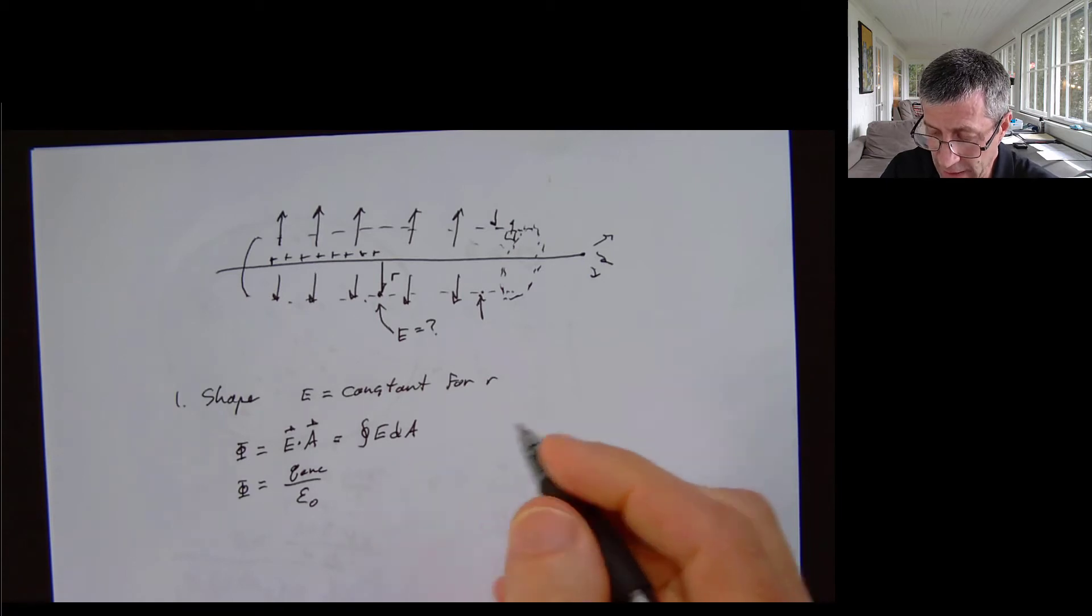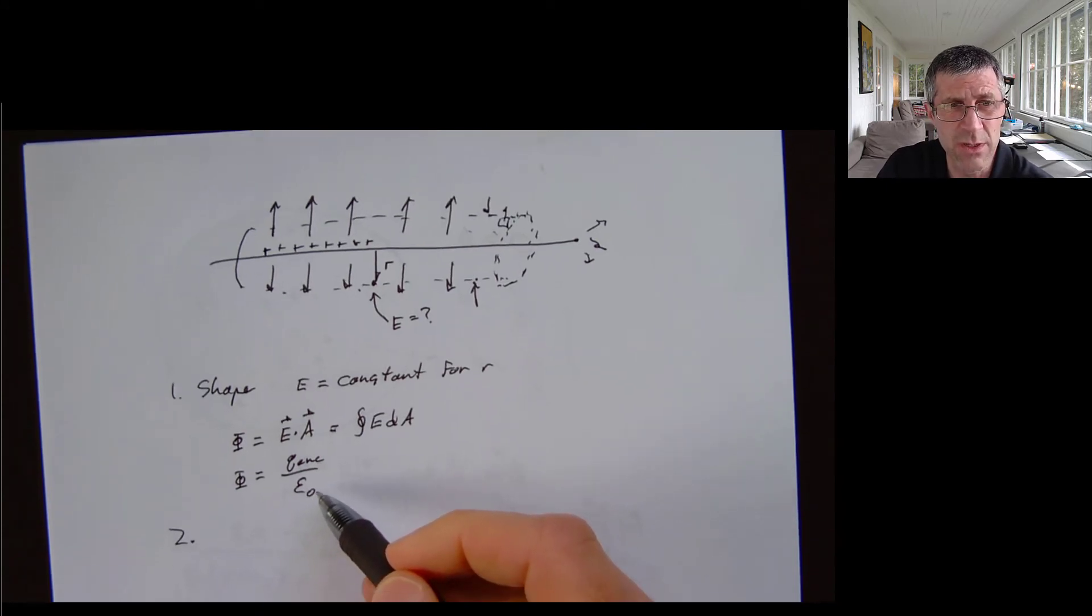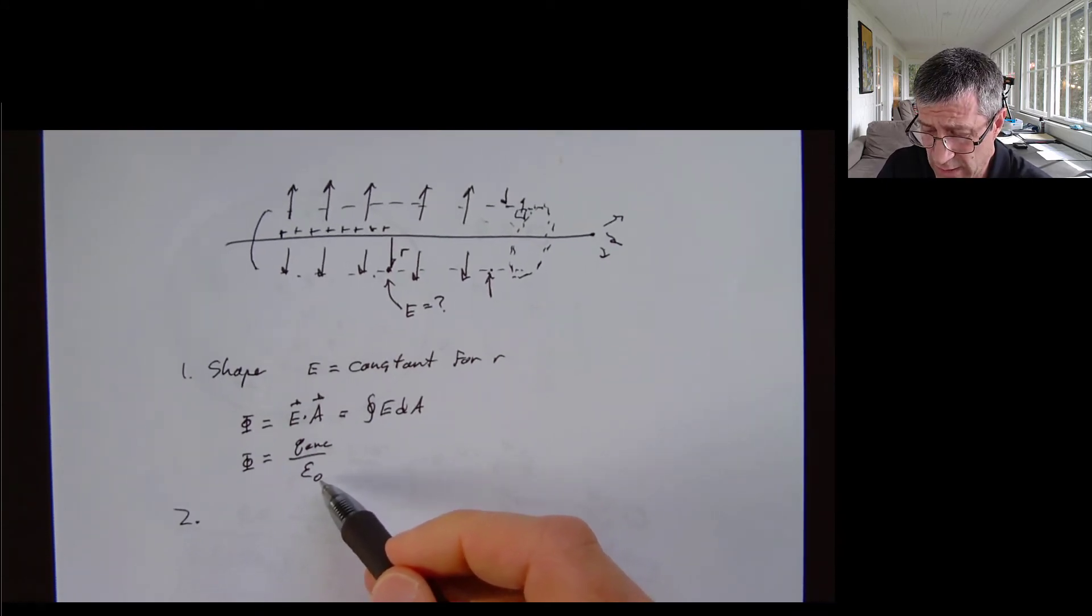So I have one challenge. I need to figure out the area. So these are the two things I have to worry about. So E is going to be a constant. That's what I'm interested in finding. Epsilon naught is a constant. So I don't have to worry about that one.